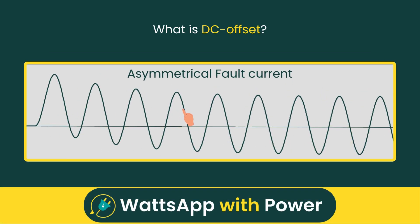You might see broad, tall positive half cycles and short, shallow negative half cycles, or the reverse. This shift is called DC offset. It decays gradually with time, depending on the system's X by R ratio.